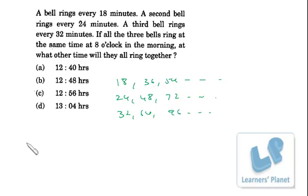So they all will be ringing together at the LCM of eighteen, twenty-four, and thirty-two and so on, right? So that will be the first data that will be there in this line, this line and this line. So that is LCM of eighteen, twenty-four and thirty-two.